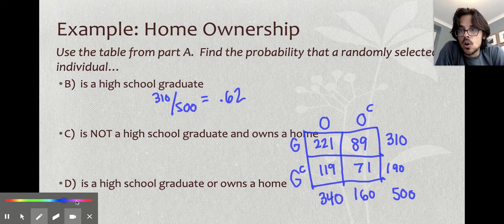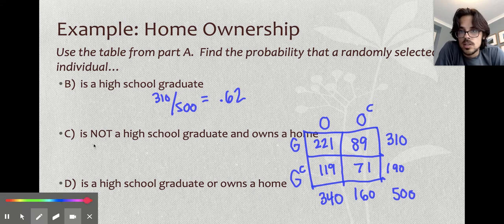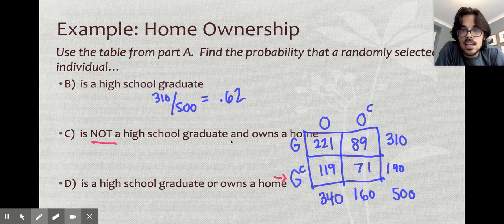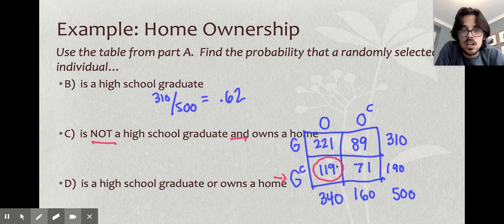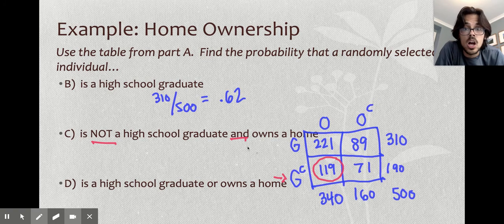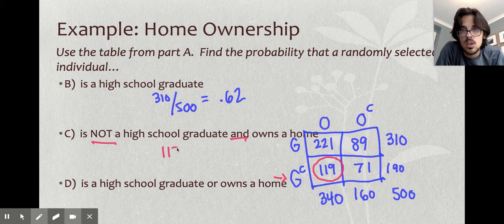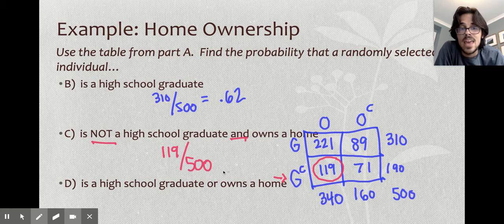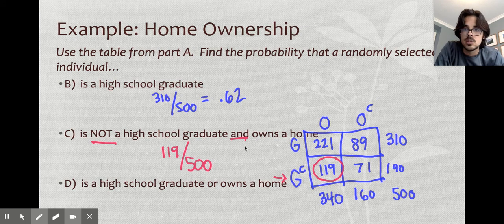Next problem says that they are not a high school graduate. So not a graduate is going to be these guys right here and they own a home. Owns a home is here. So not graduate and a home is going to be these people in my table. So I have 119 people who qualify out of the 500 total and then you can make that into decimal. I'm not even going to bother with this one. So we just have my answer right there.